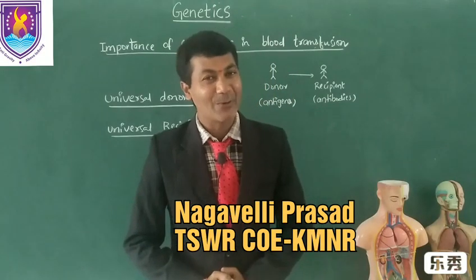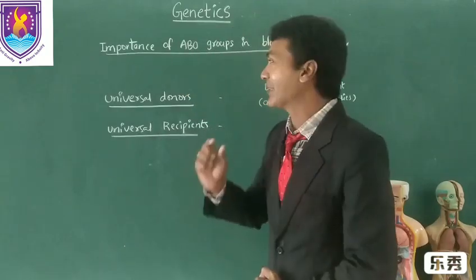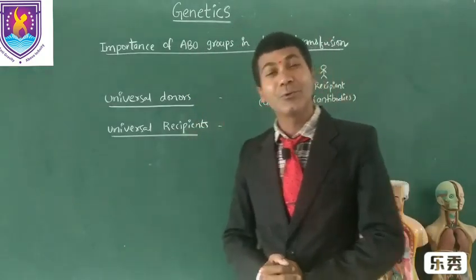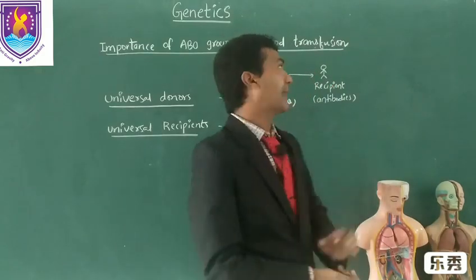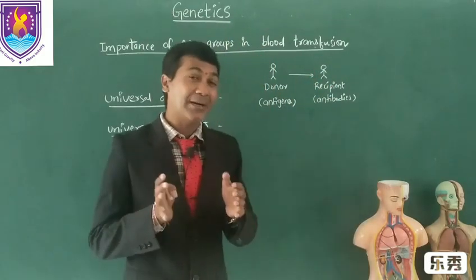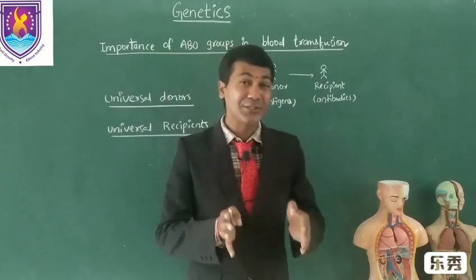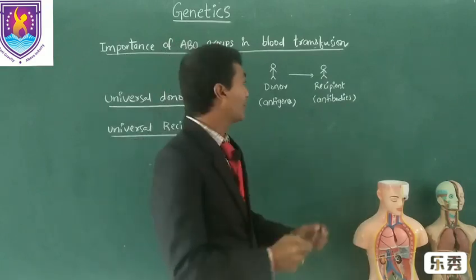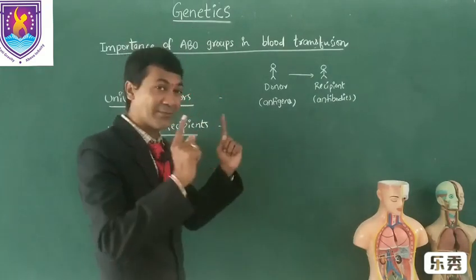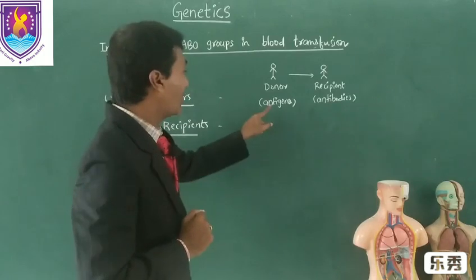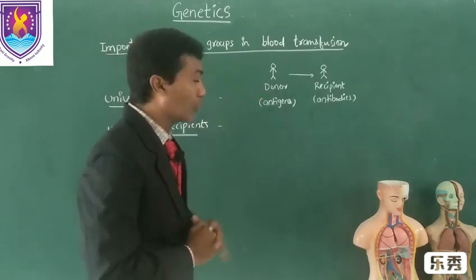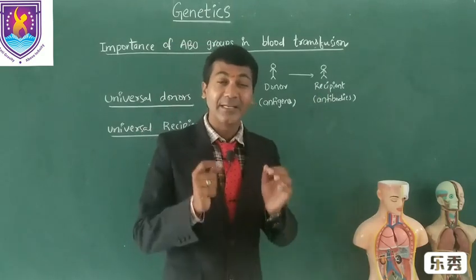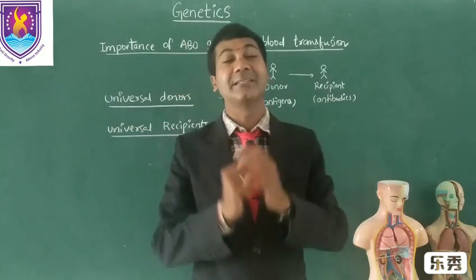Hello everyone. Now I am going to explain an interesting topic: the importance of ABO groups in blood transfusion. While doing blood transfusions from one person to another, we have to focus on one thing — that is the type of antigens of a donor and the type of antibodies of a recipient. That should be taken into consideration.